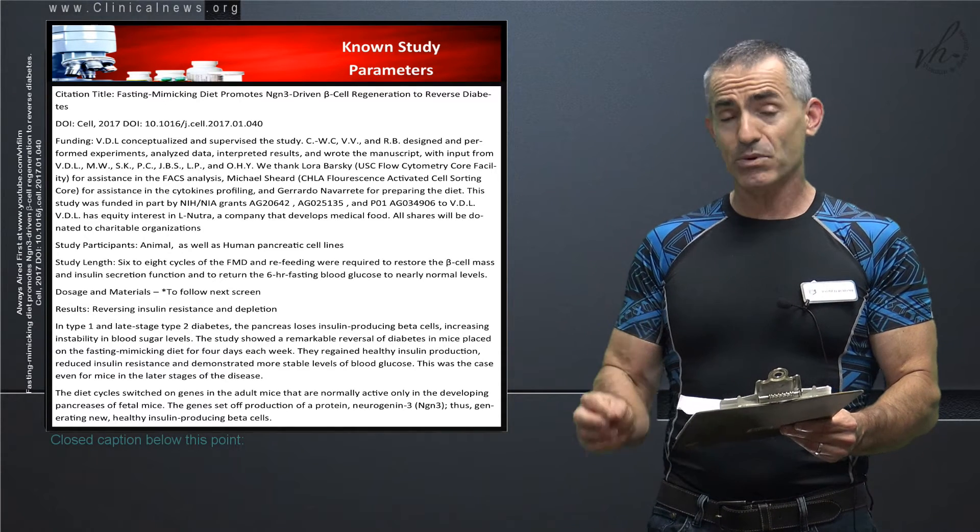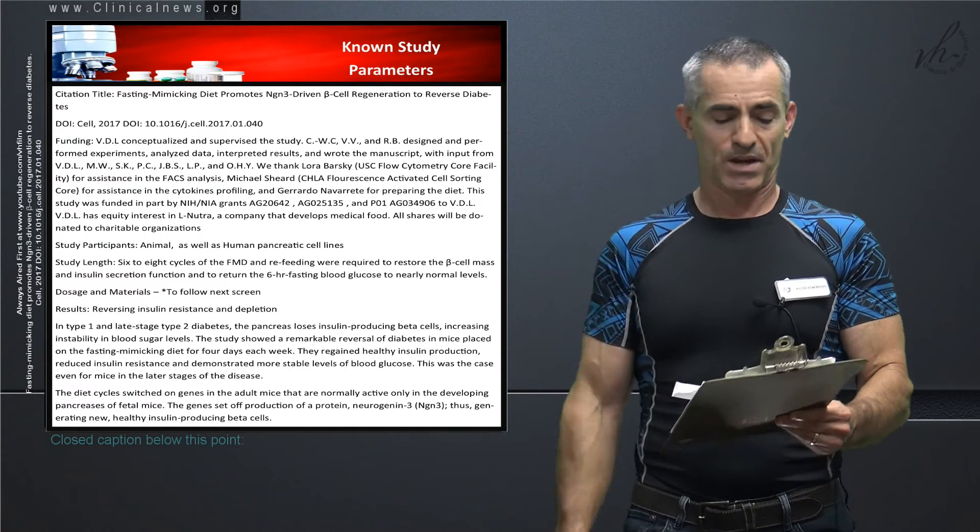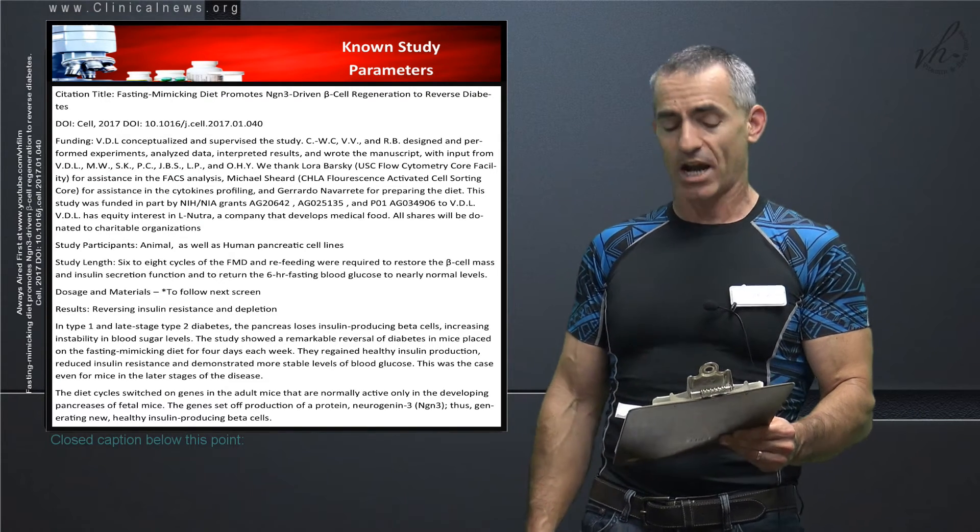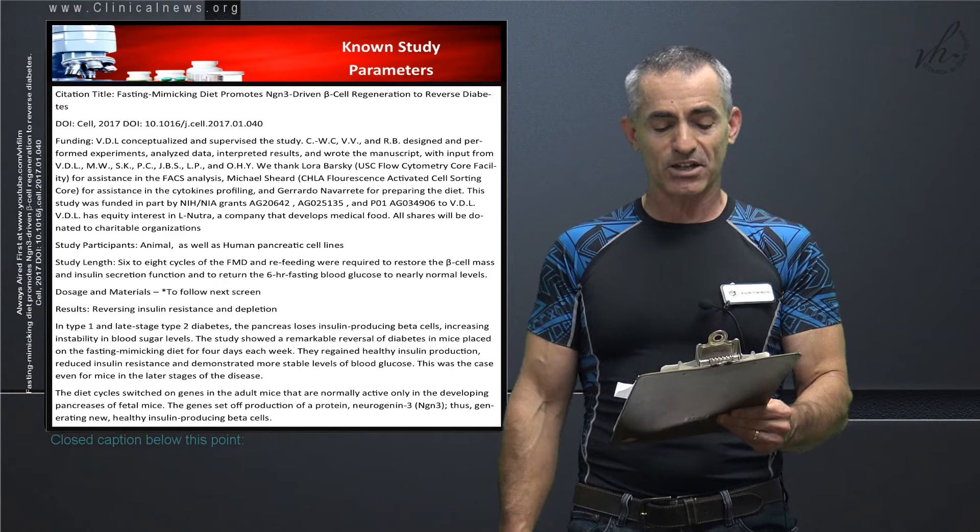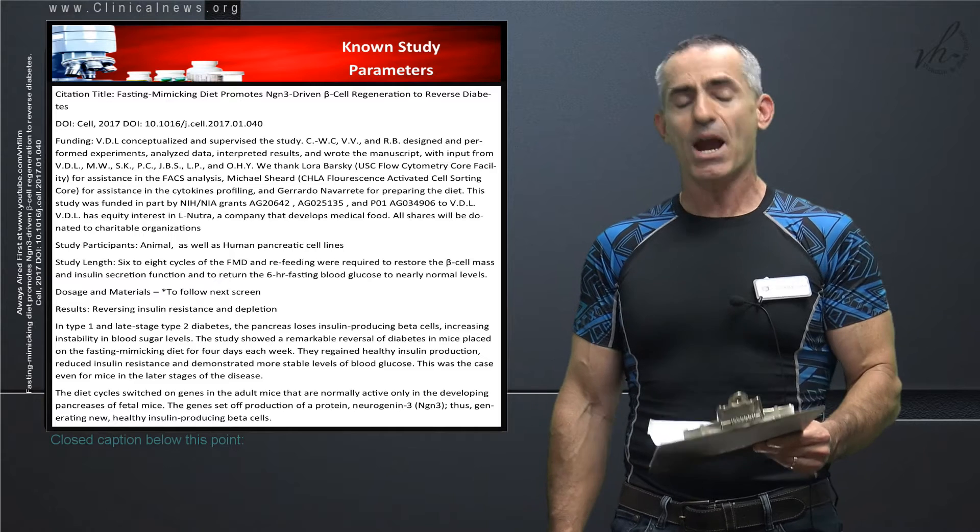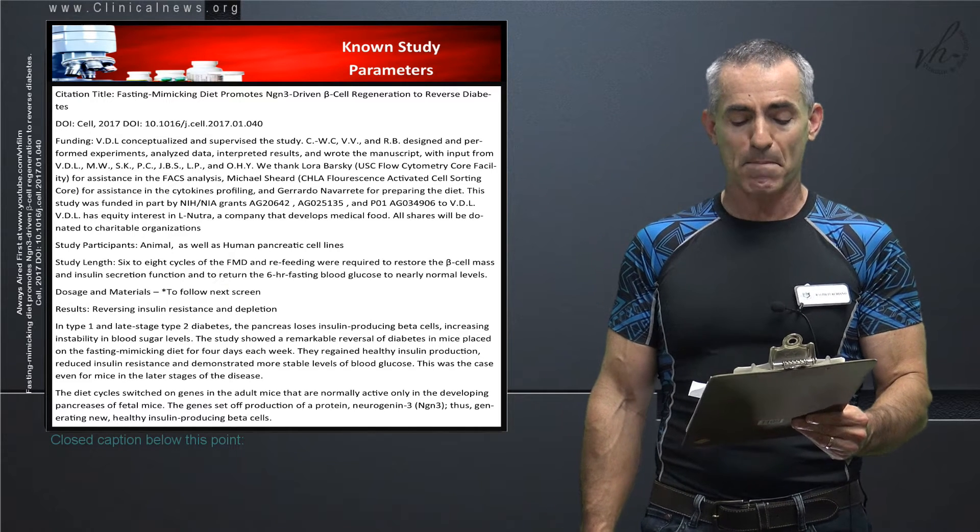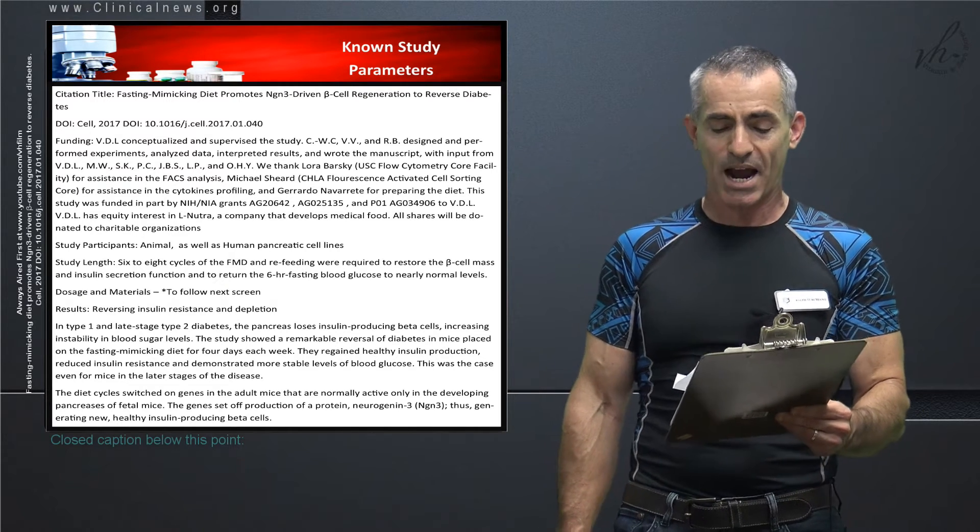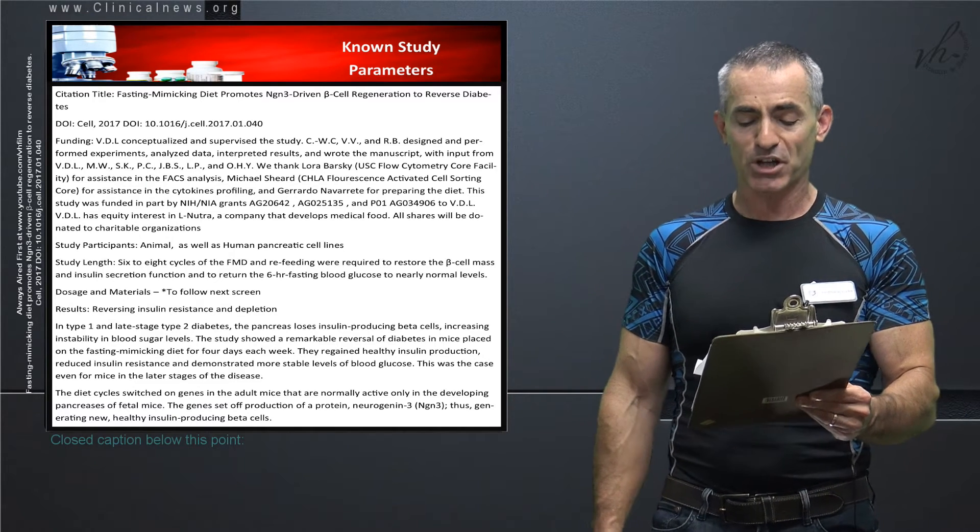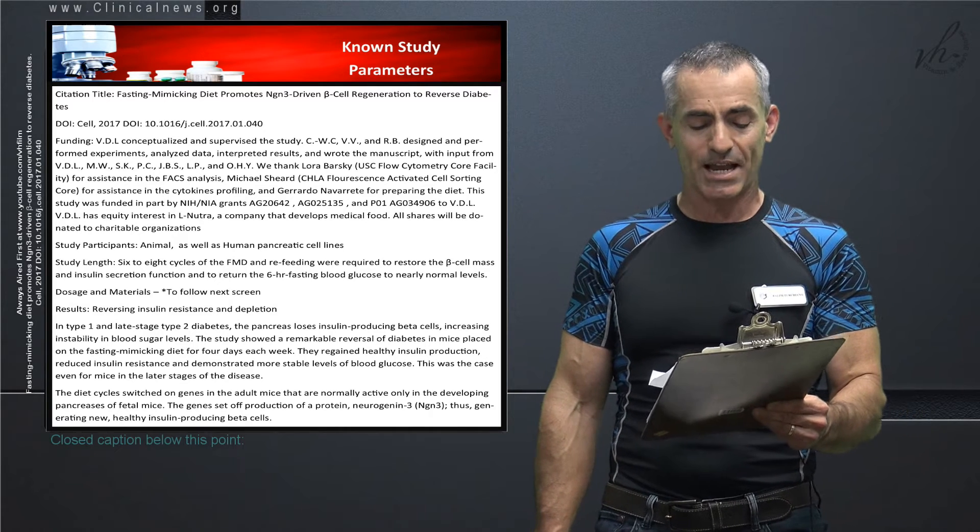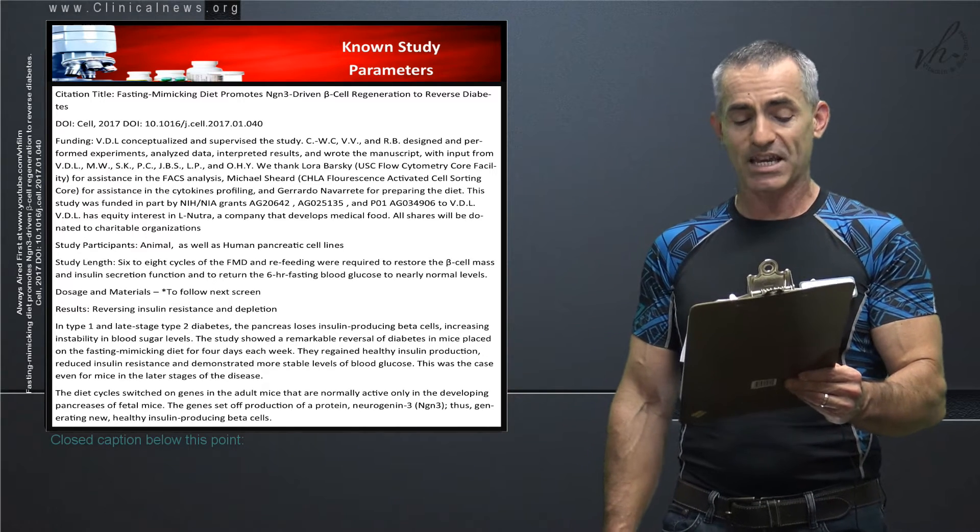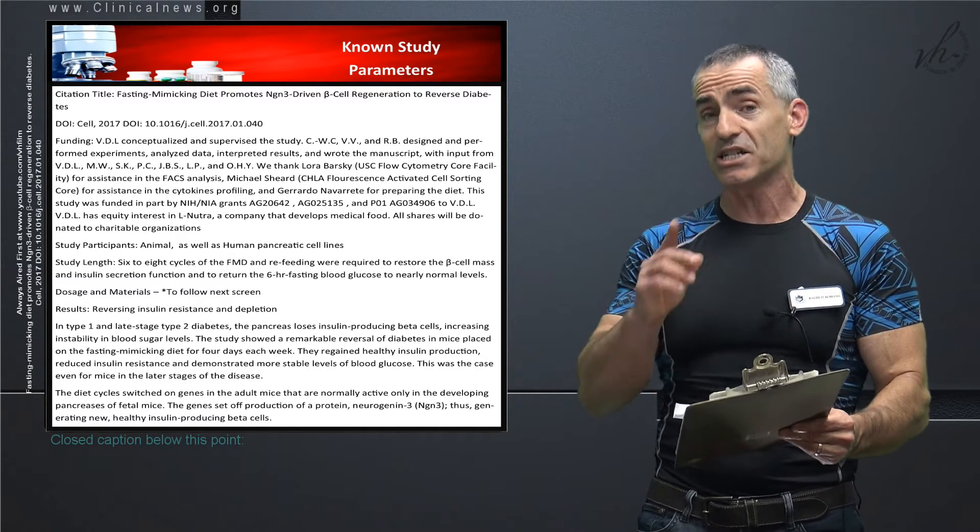Reversing insulin resistance and depletion: in type 1 and late stage type 2 diabetes, the pancreas loses insulin producing beta cells, increasing instability in blood sugar levels. The study showed a remarkable reversal of diabetes in mice placed in the fasting mimicking diet for four days each week. They regained healthy insulin production, reduced insulin resistance, and demonstrated more stable levels of blood glucose. This was the case even for mice in the later stage of disease.